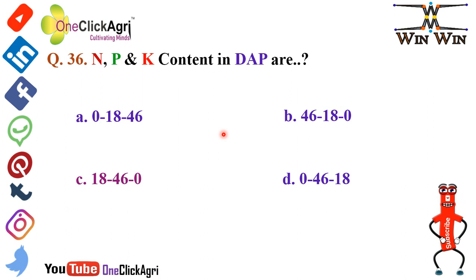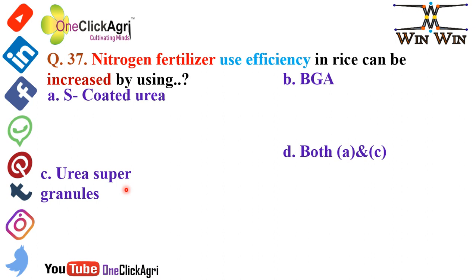Question number 36: NPK contained in DAP — DAP means Diammonium Phosphate. The right answer is 18:46:0. This is the N:P:K content in DAP — please remember this value.